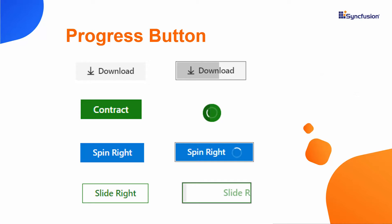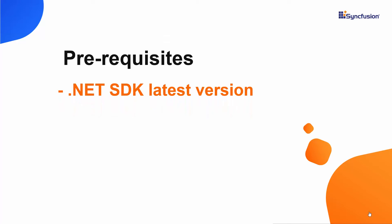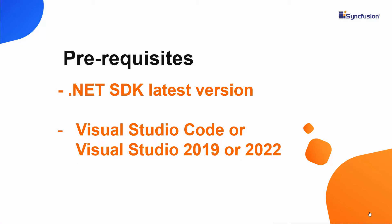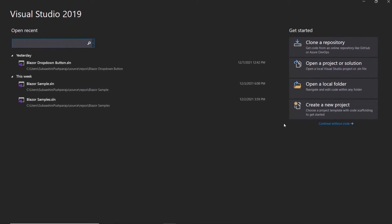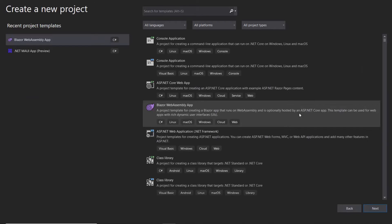I will start with the Blazor application creation process. I need to make sure the .NET Core SDK's latest version is installed in my machine. I should also have Visual Studio Code, Visual Studio 2019, or Visual Studio 2022 installed. In this tutorial, I am going to create a new Blazor app, so let me open Visual Studio 2019 and create a new project from the project dashboard. From the list of project templates, I choose Blazor WebAssembly app and click Next.